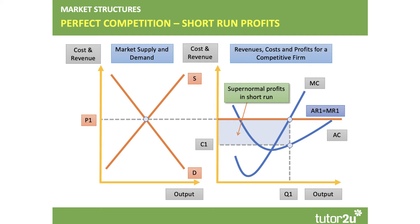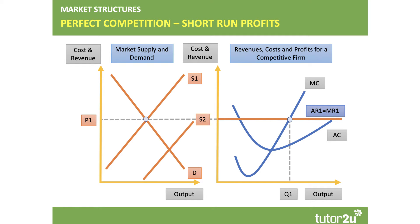So you need to be able to show how the market adjusts towards an equilibrium. If most firms are making supernormal profits, we expect that to be a signal for new firms to enter the market. If they enter, the market supply curve will shift outwards — in this case from S1 to S2. There's an increase in the number of firms, each producing a standardised product. If there's no change in market demand, then the equilibrium price will fall following that shift in the supply curve.